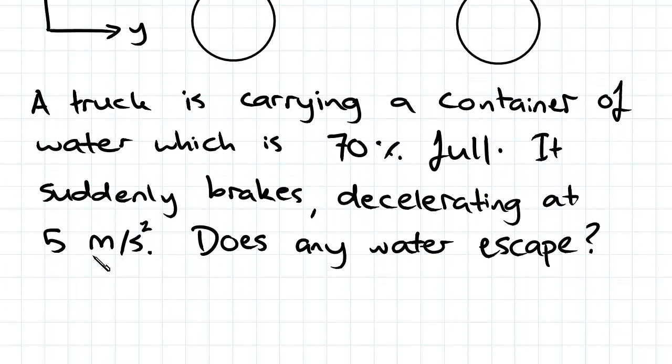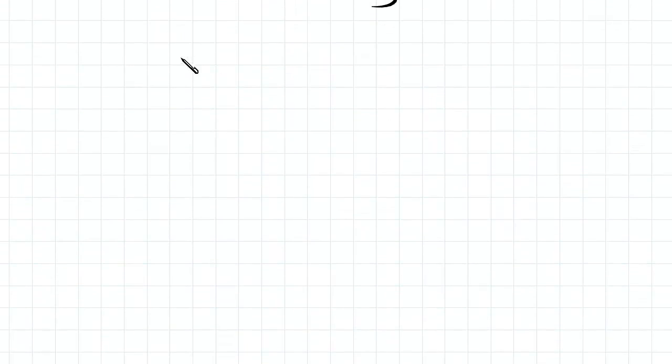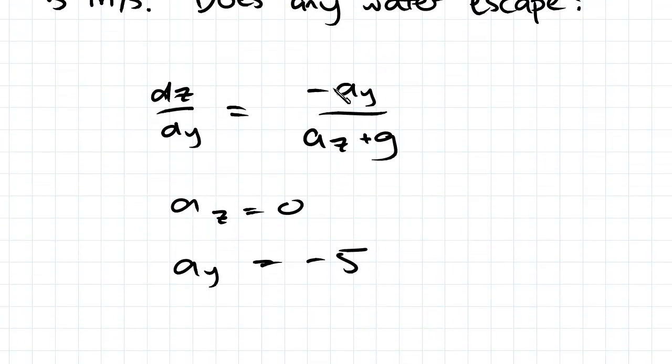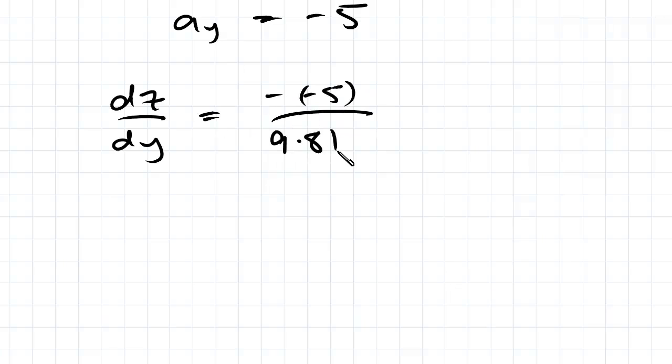The question said it decelerates at five meters per second squared, so ay equals negative five. We can substitute this into our acceleration equation and we'll get dz/dy equals negative five over 9.81, which equals 0.51.